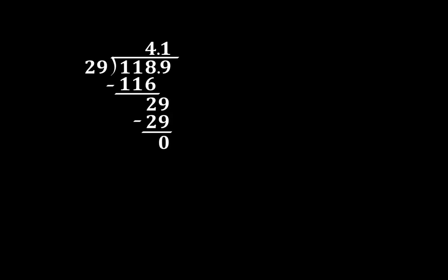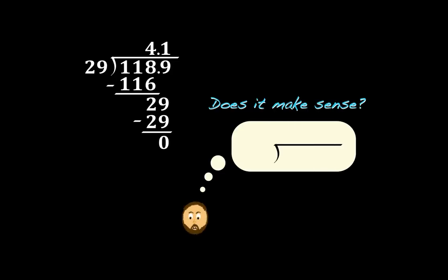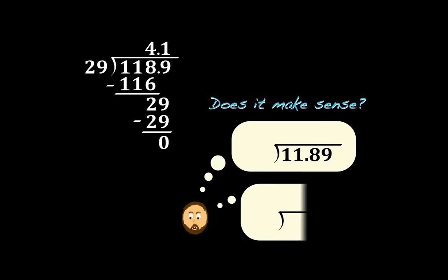So again, we'll go ahead and ask this question. Does my answer make sense? Well, we started with a number that is really close to 12, and we divided it by a number that was really close to 3. So we ended up with 4 and 1 tenth, which is right around 4. It's what we would expect. So 4 and 1 tenth makes perfect sense here.